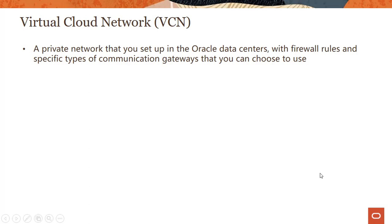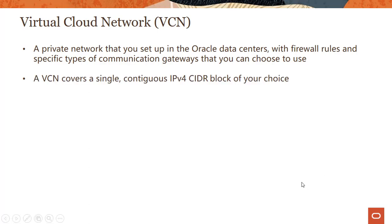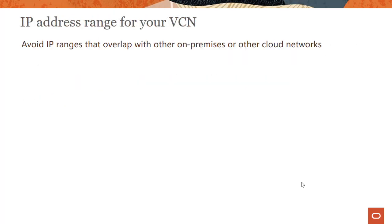So what is a Virtual Cloud Network? A VCN is a private network that you set up in Oracle data centers with firewall rules and specific types of communication gateways that you can choose to use. A VCN covers a single contiguous IPv4 CIDR block of your choice. Today we just support IPv4 and not IPv6, and a VCN resides within a single region.